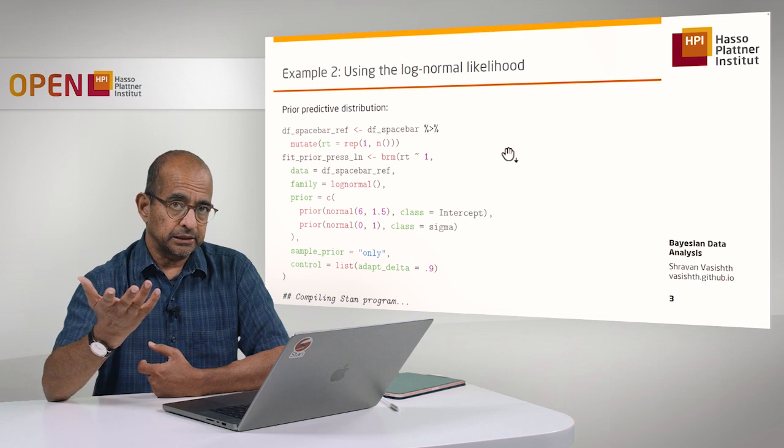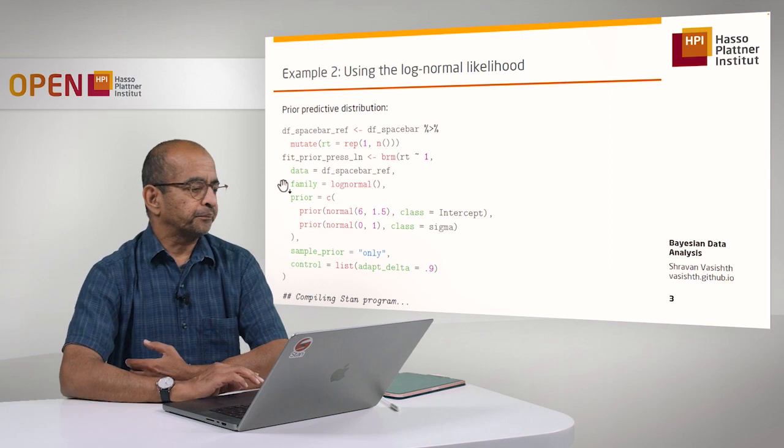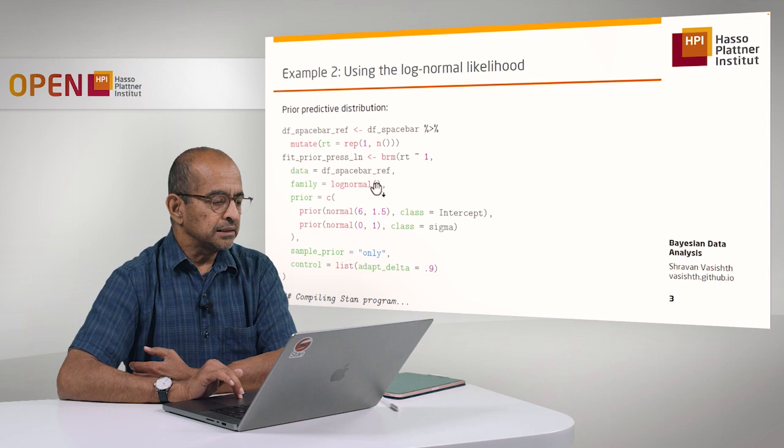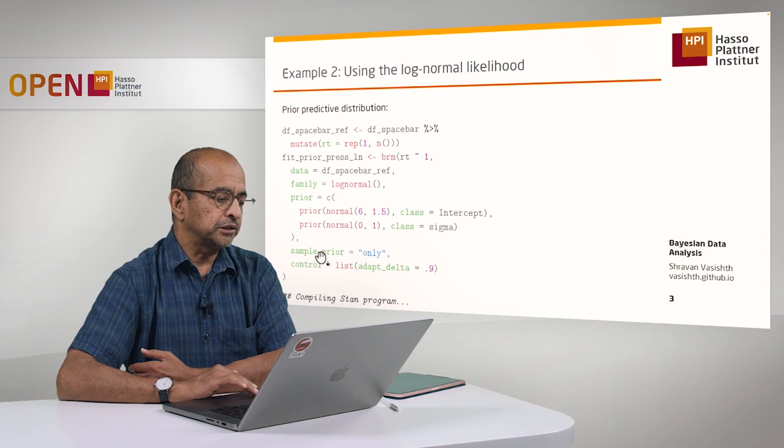What will change in the model specification in BRMS is very little actually. We are going to define a log-normal likelihood instead of the Gaussian—that's a big change. And we are going to specify the priors in this prior parameter: normal 6, 1.5 prior. This is on the log scale for the intercept.